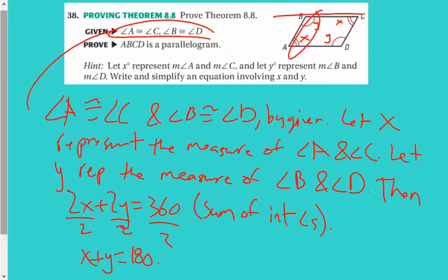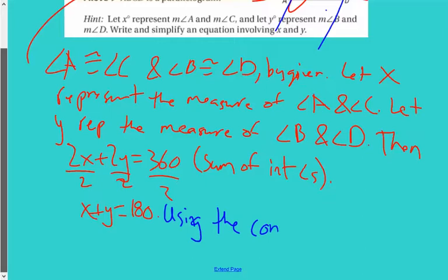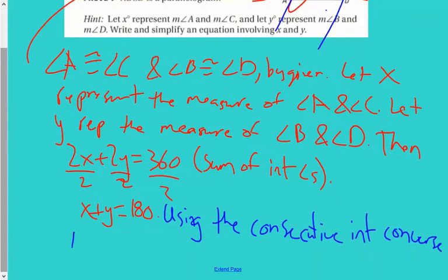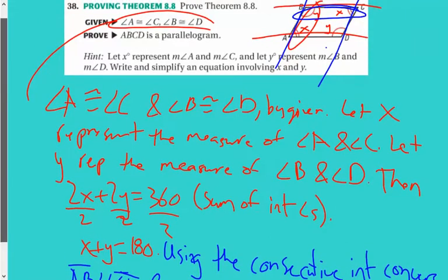So those BC and AD are parallel. And then if I switch my colors, let's see, go back to blue here. These two are supplementary, so these two are parallel. Using the consecutive interior converse, we can say that AD is parallel to CD, and we can say that BC is parallel to AD.